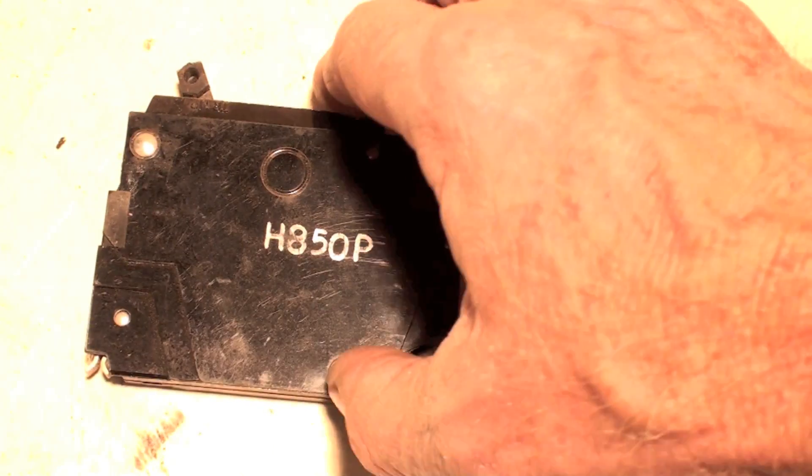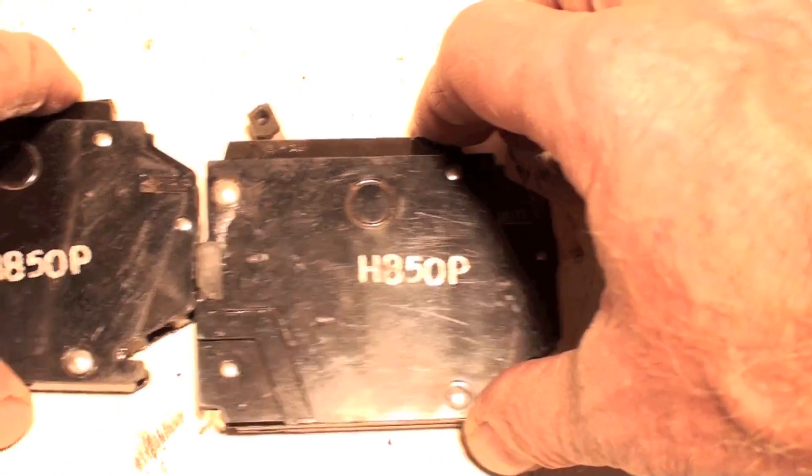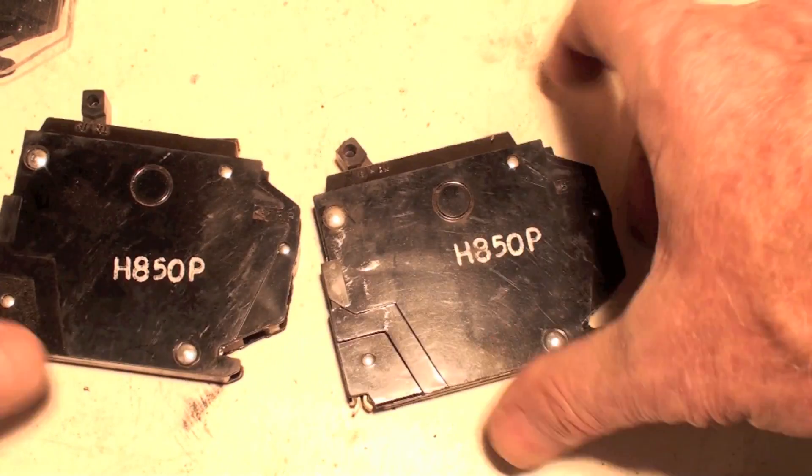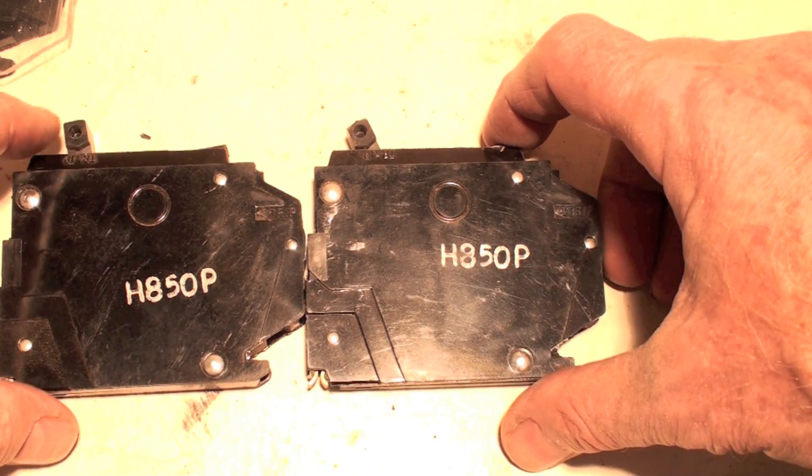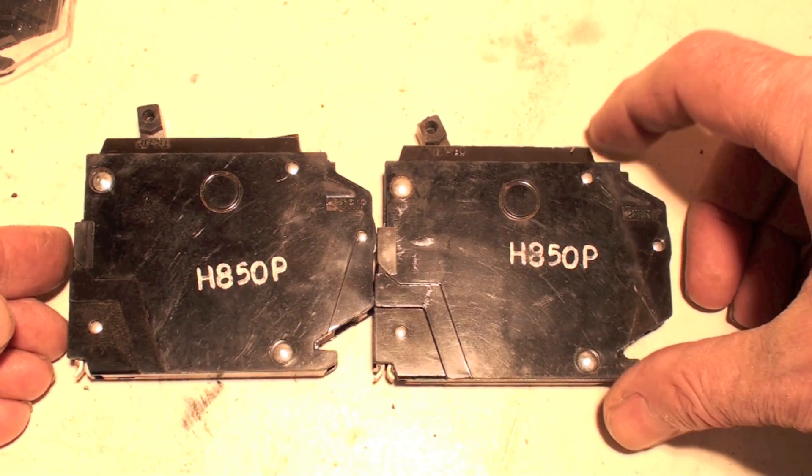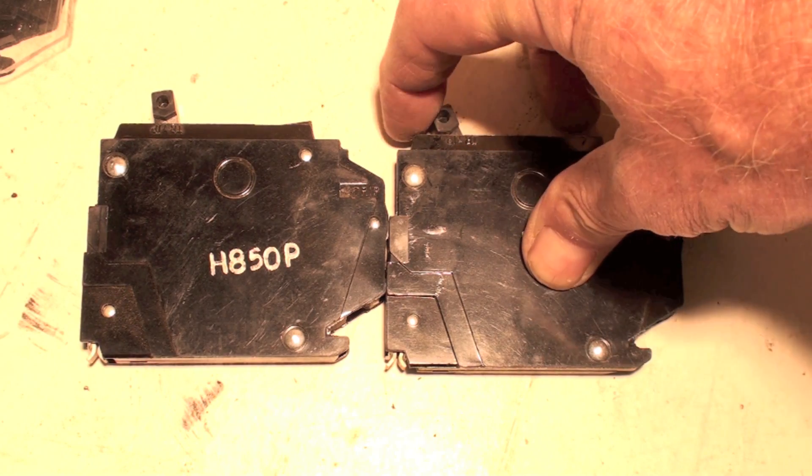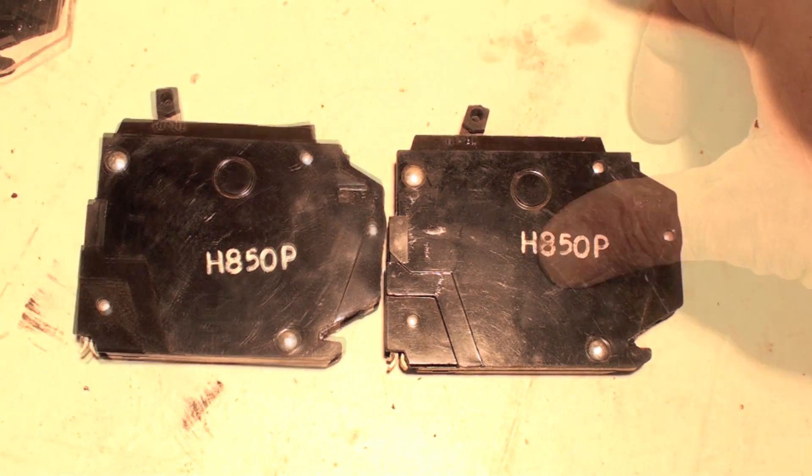Let me put these two beside each other. Okay, you can see it's the same breaker, but the one on the right is in the on position. If I turn it to the off position, it's like this. This one here is in the center position, that means it's tripped.